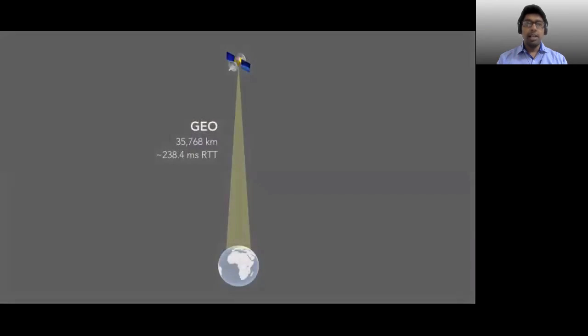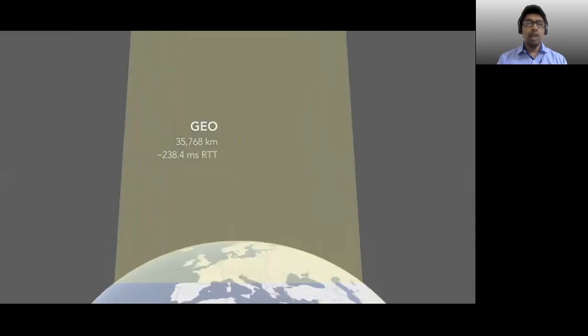To start with, let us compare GEO and LEO satellite heights. A geosynchronous or GEO satellite has a height of 36,000 kilometers and the minimum round-trip times or RTTs are nearly 240 milliseconds. Low-Earth orbit or LEO satellites, on the other hand, fly at heights between 300 and 2000 kilometers, thus reducing RTTs by more than 60x.